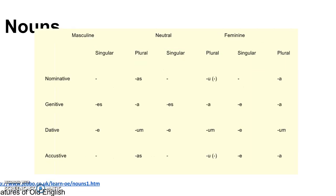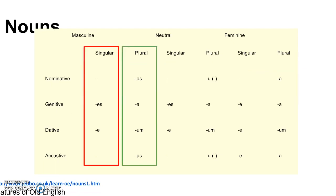Inflections of nouns also demonstrated number in their endings. There were two sets of endings for each declension to indicate whether the noun was singular or plural.